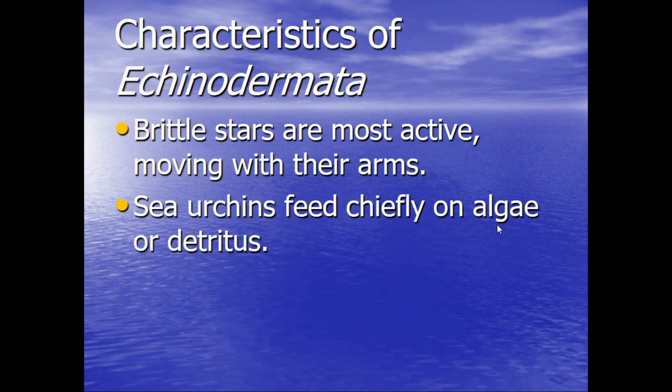Continuing with characteristics of Echinodermata: brittle stars are the most active, using their arms to navigate through their environment. Sea urchins feed chiefly on algae or detritus — detritus being dead and decaying organic matter found on the bottom — and sea urchins will come in and clean that material up.